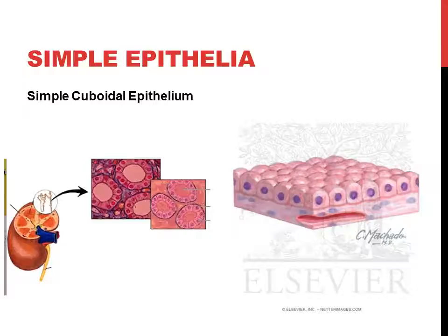Simple cuboidal epithelium is like simple squamous — one cell layer thick — the only difference being it's made up of cuboidal cells. This tissue is also good for secretion and absorption because it's a single cell layer thick; things can move across it easily. It's slightly stronger and more structurally sound than simple squamous. We find it in the kidney tubules, where absorption and filtration occur, and lining ducts of glands.